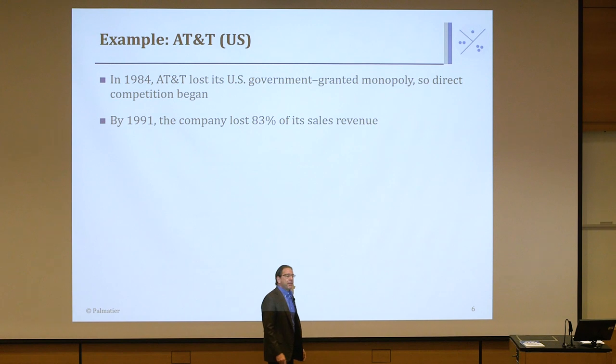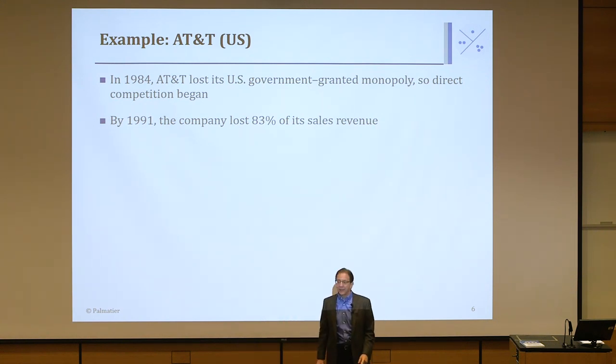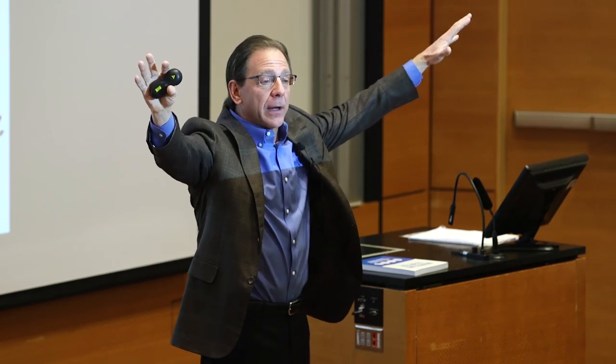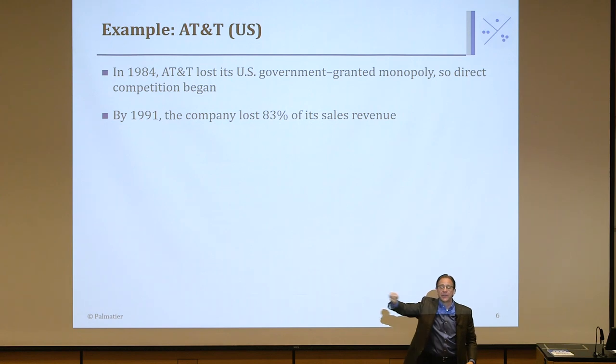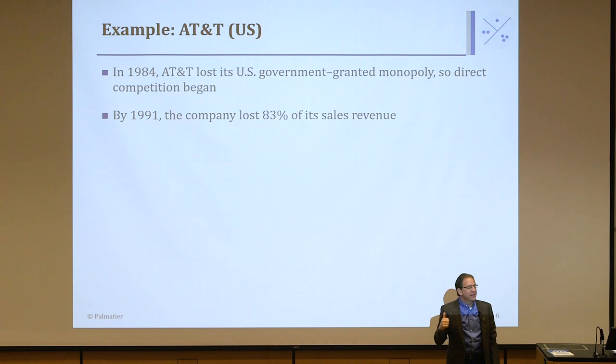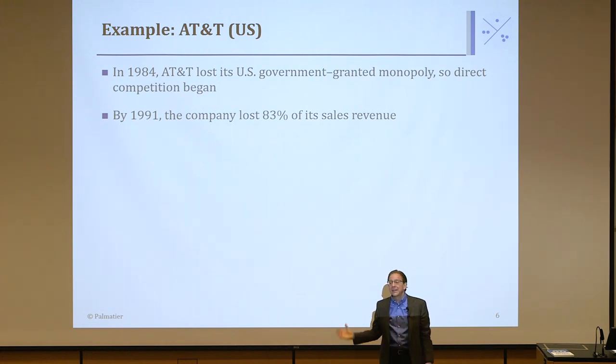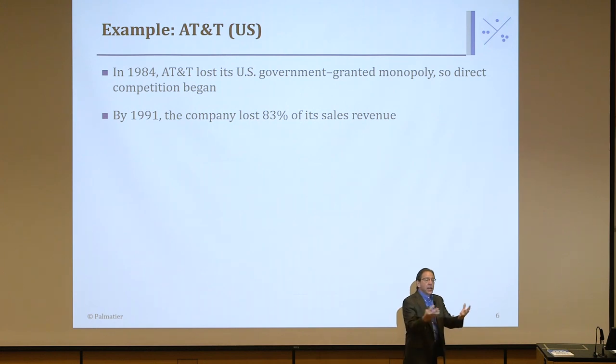Why did AT&T lose 83% of revenue? Until that point, AT&T had a monopoly and said 'we know what's best' — selling one phone. They came out with a new phone called the Trimline that took 10 years to develop, and they were excited because it came in five colors. When the market opened, all sorts of smaller companies came in and said 'here's a group of customers I can service better than AT&T.' One by one, different companies peeled away customer sub-segments representing 83% of their sales.